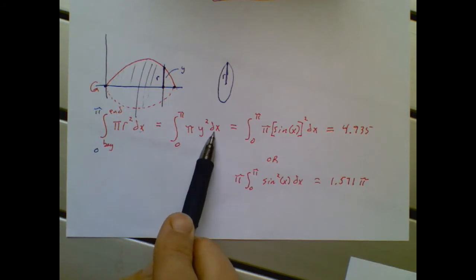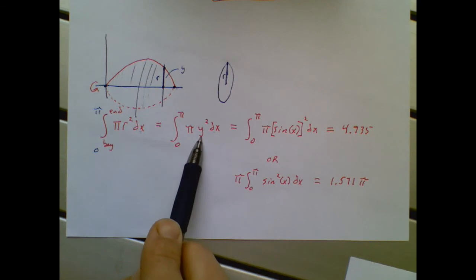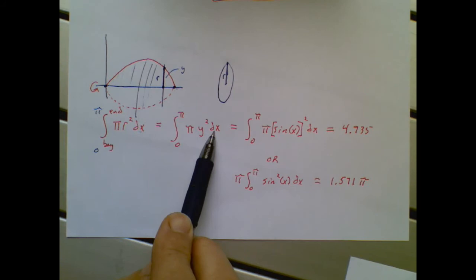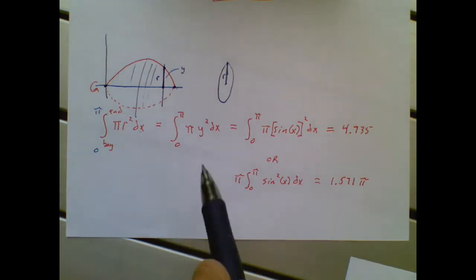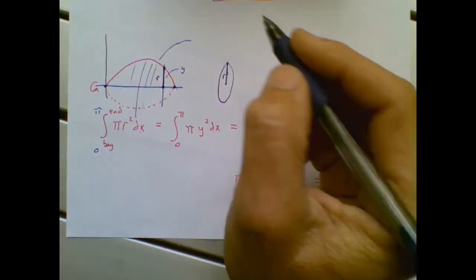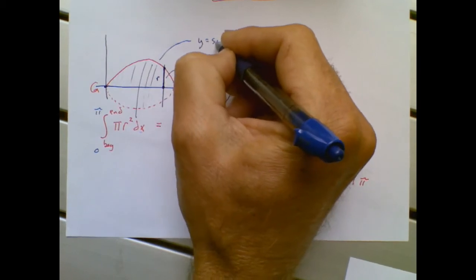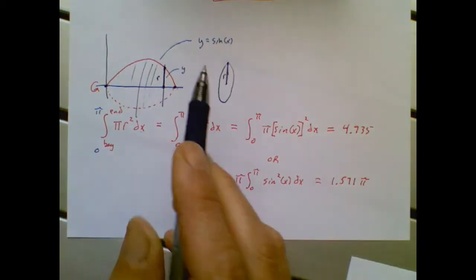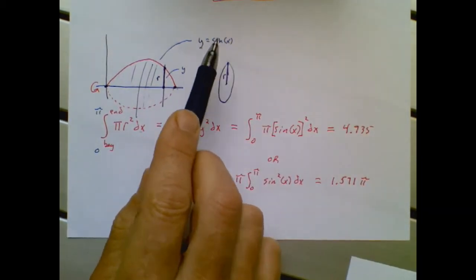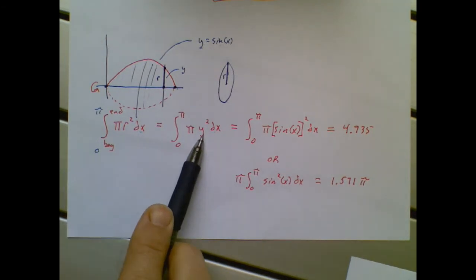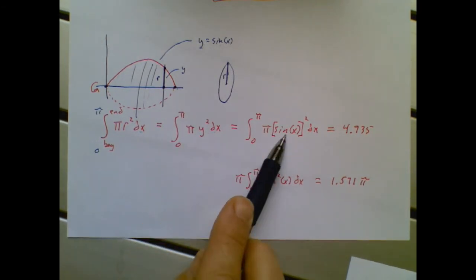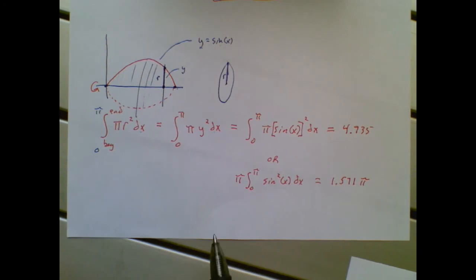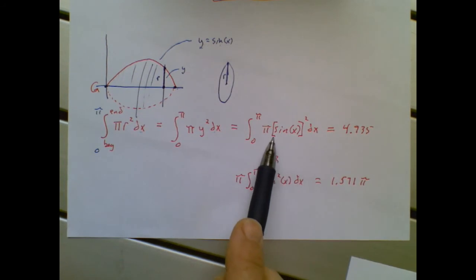That tells me that the y is an unwelcomed variable. I want x variables. Well, lucky for us, this is an easy switch. This is the equation y equals sine of x. So I can replace y with the sine of x. I can replace y with the sine of x. Do you hear that blue jay? He's angry.